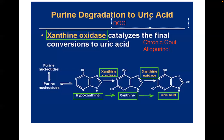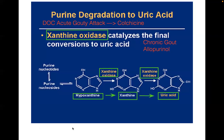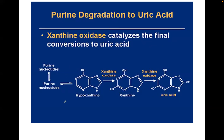The drug of choice for an acute gouty attack is colchicine. Chronic gout is treated with allopurinol. Don't forget colchicine's action on microtubules — it is a microtubule inhibitor and is anti-inflammatory. That's a sure bet on your exam.